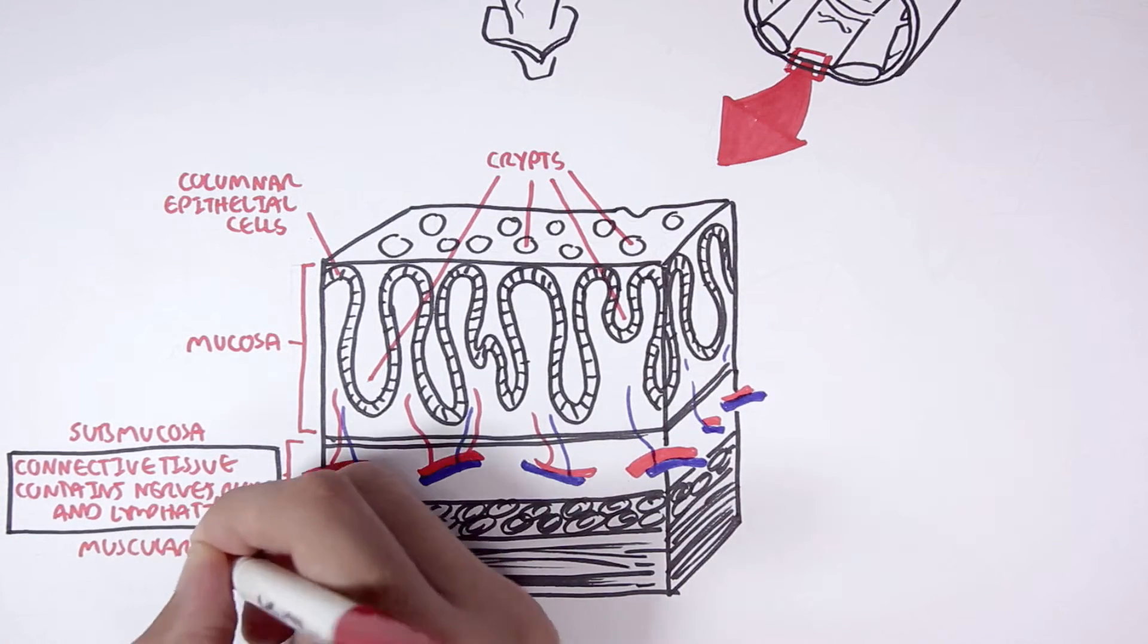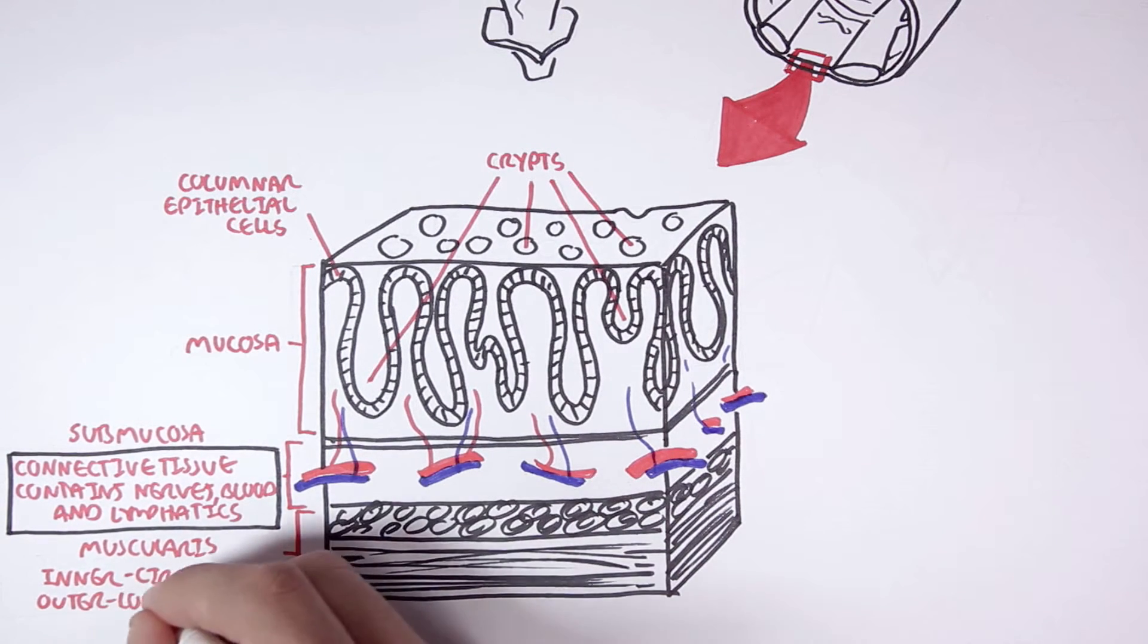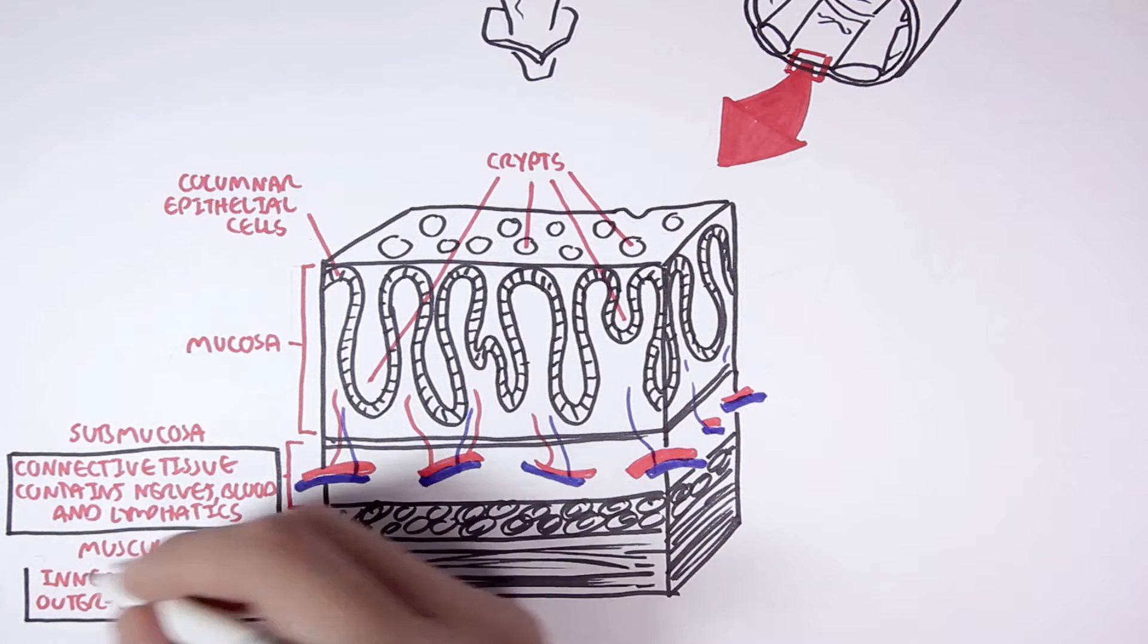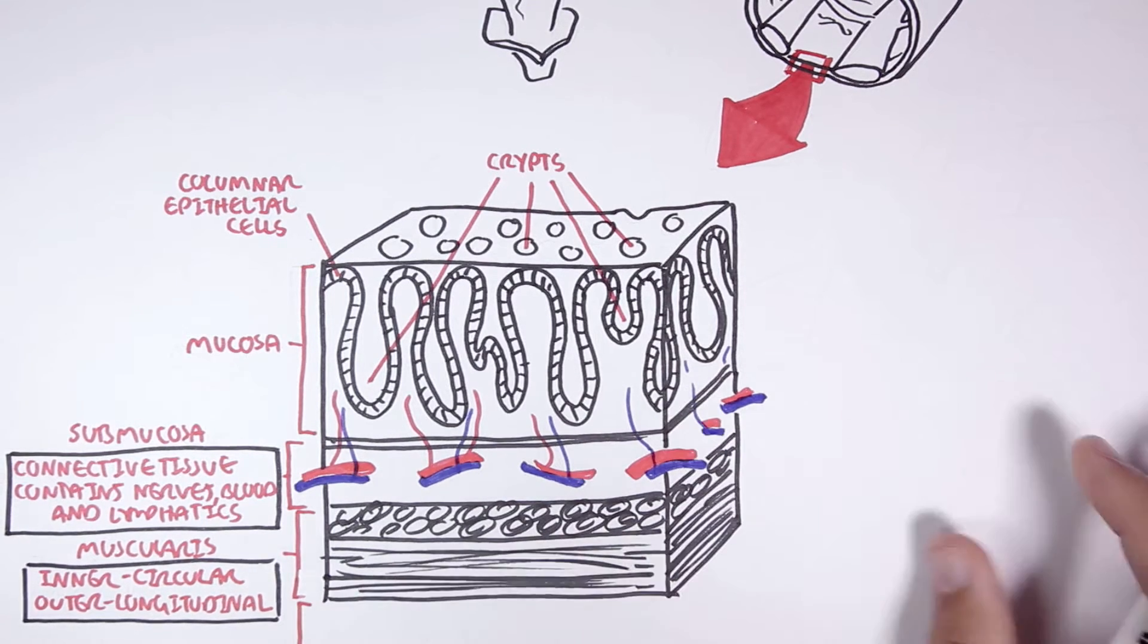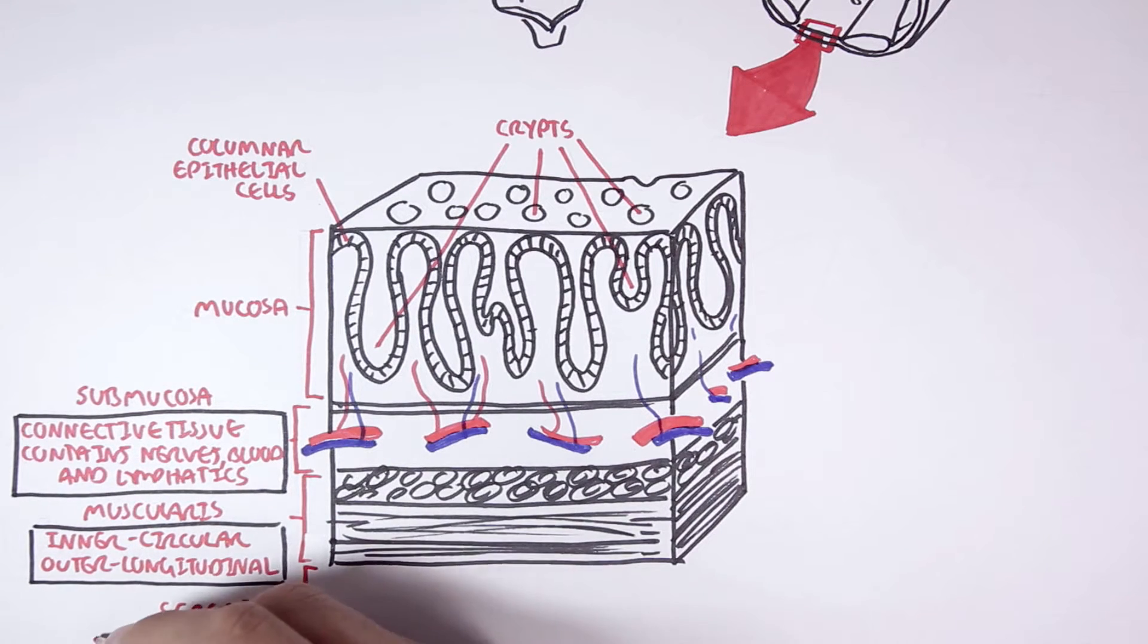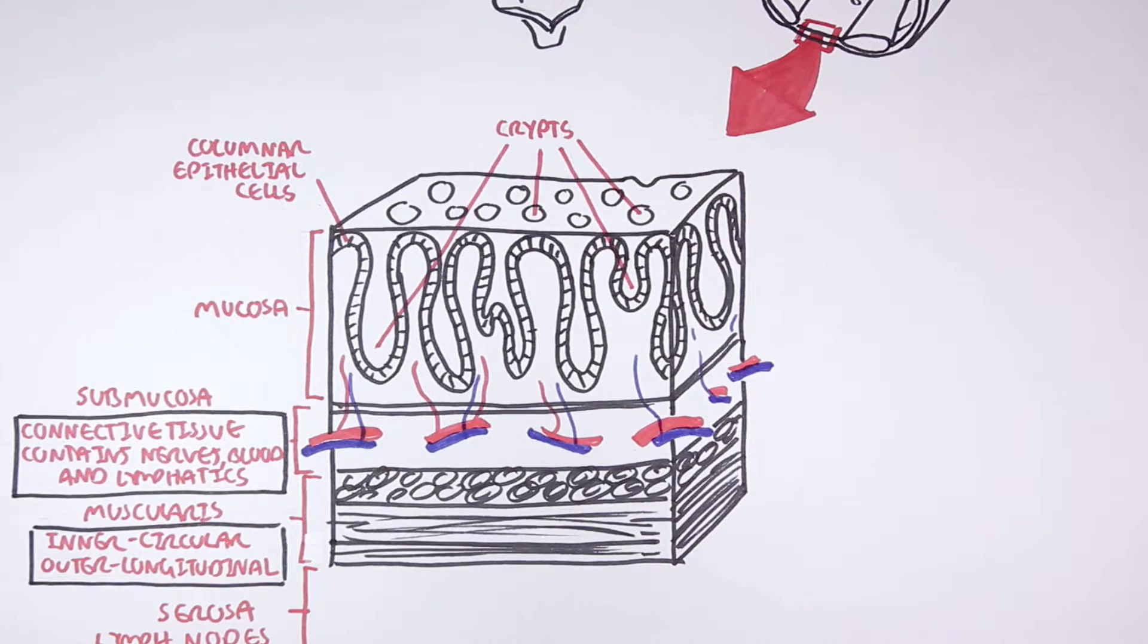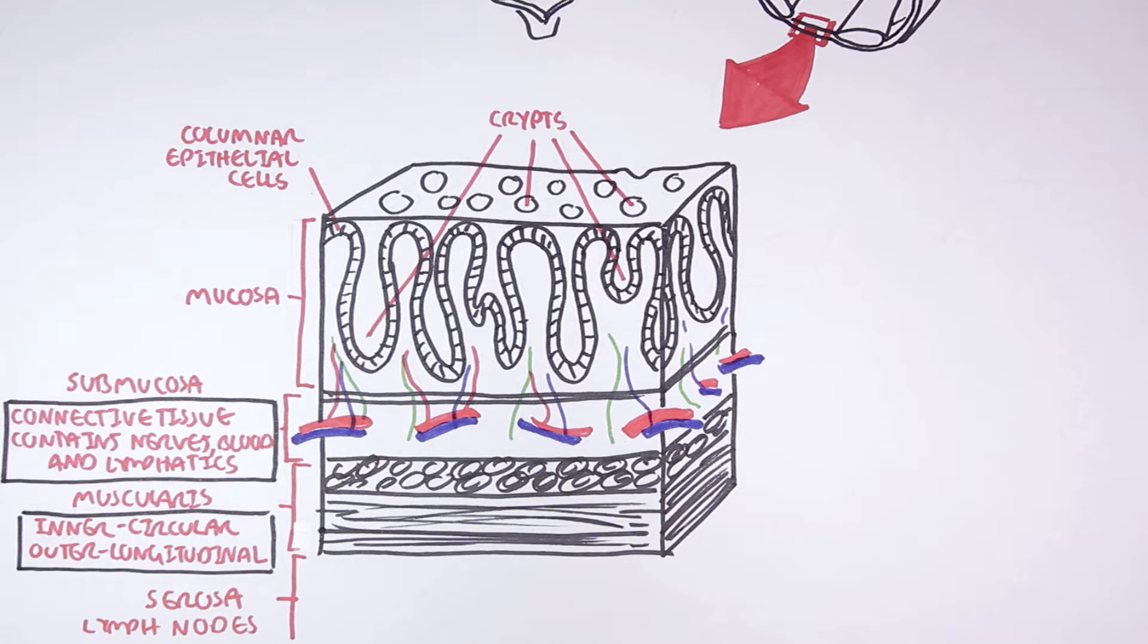There are actually two muscle layers. We have the inner muscle layer where we have circular muscles and then the outer muscle layer where we have longitudinal muscles. The outermost layer of the large intestine is connective tissue layer called the serosa. After the serosa we can find various structures such as lymph nodes that connect with lymph vessels that reach the mucosa layer.